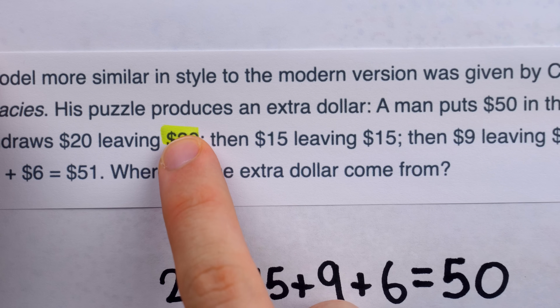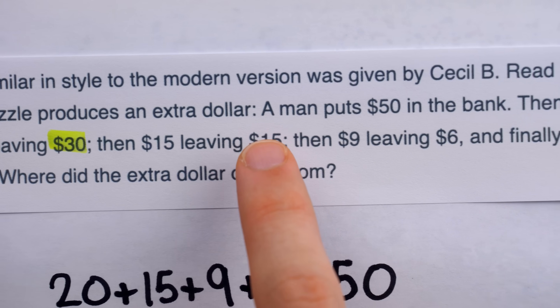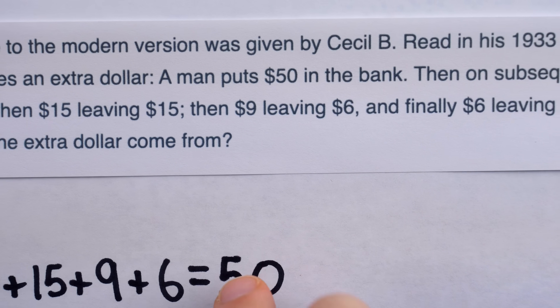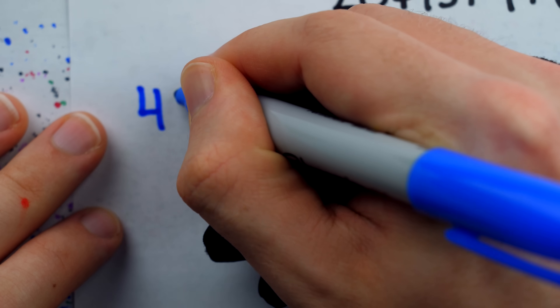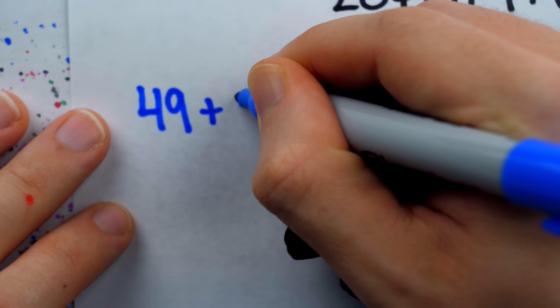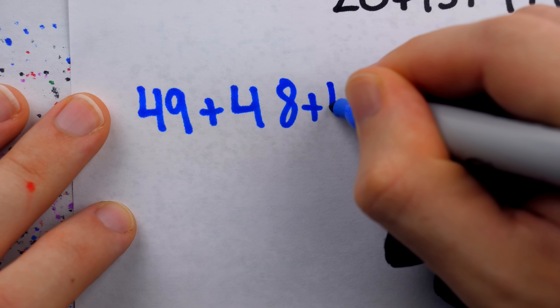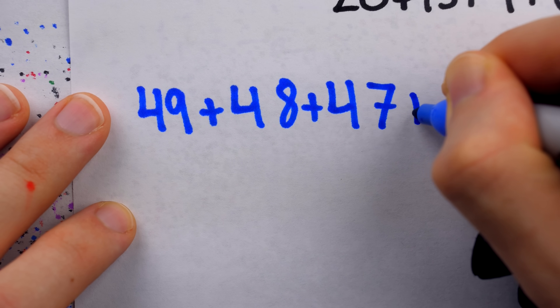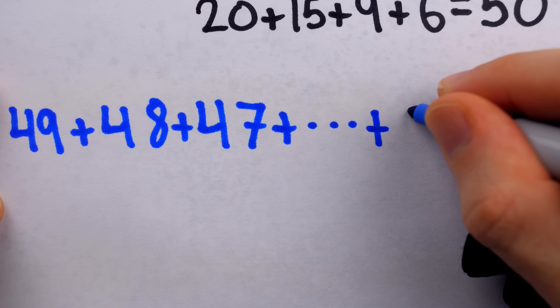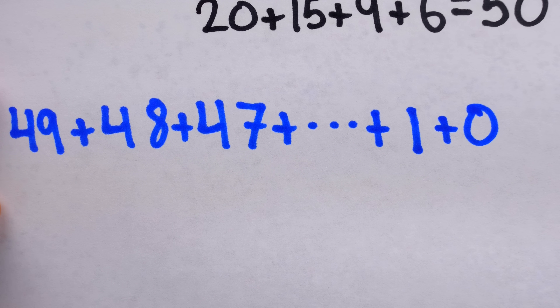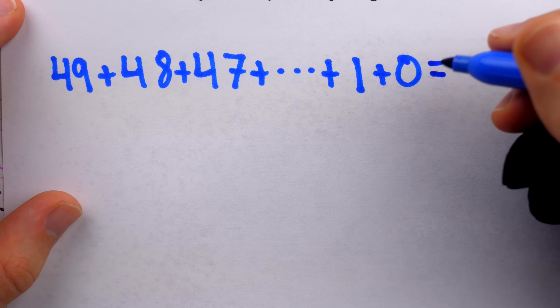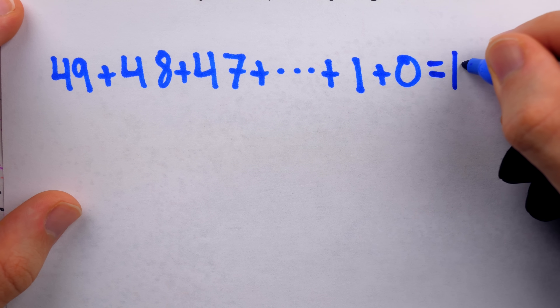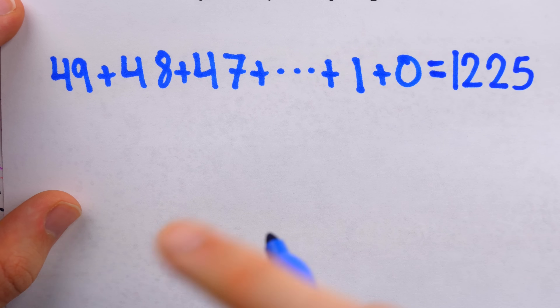But when you're just adding amounts that were left over — $30, $15, $6 — that's not necessarily going to add up to the original amount. For example, imagine the man had withdrawn $1 at a time: at first there'd be $49 left over, then $48, then $47, and so on, all the way down to there finally being $1 left over, and then $0. Obviously, adding these amounts doesn't give you the original total of $50 — in fact, this is $1,225, and it has nothing to do with $50.